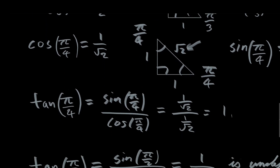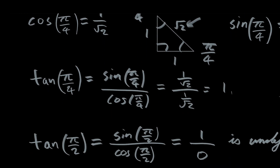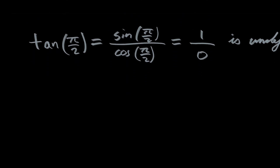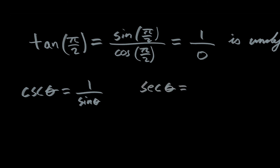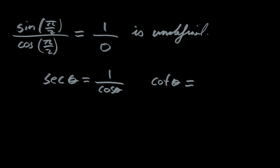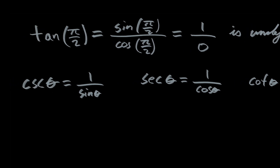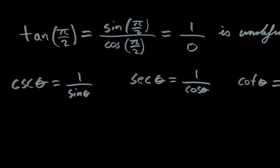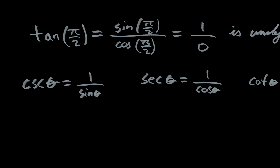Once you can find the sine and the cosine of the special angles, you can find the tangent and everything else defined in terms of sine and cosine. For instance, the reciprocal trigonometric functions: the cosecant of theta equals one over the sine of theta, the secant of theta equals one over the cosine of theta, and the cotangent of theta equals one over the tangent of theta — or equivalently, the cosine of theta over the sine of theta, which is often easier to work with by hand.